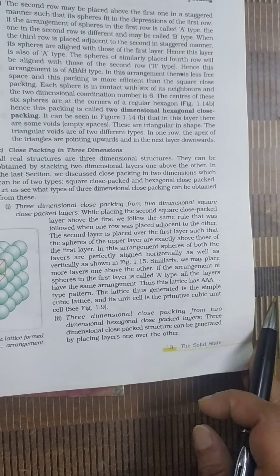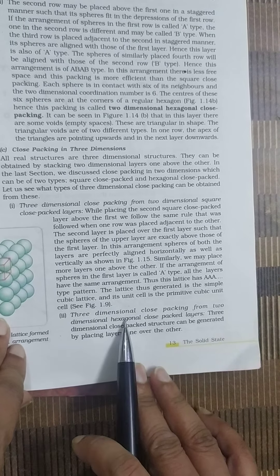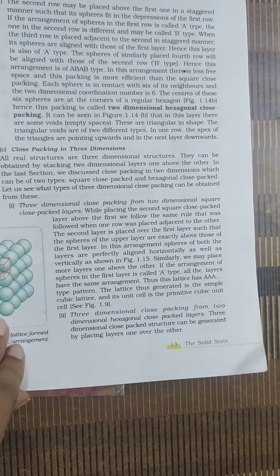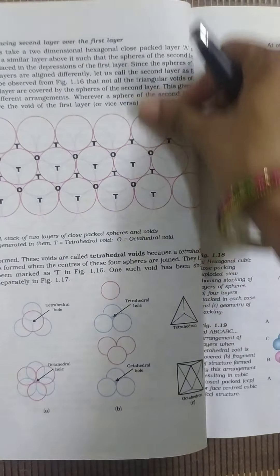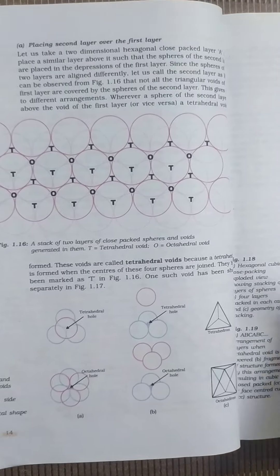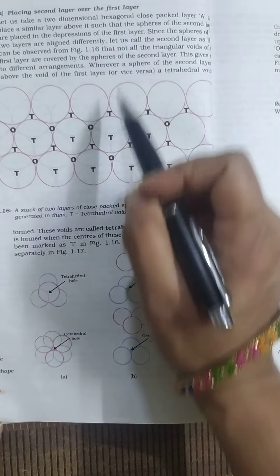When we are talking about three dimensional close packing from two dimensional hexagonal close packed layers, there are two situations. First one is placing second layer over the first layer.